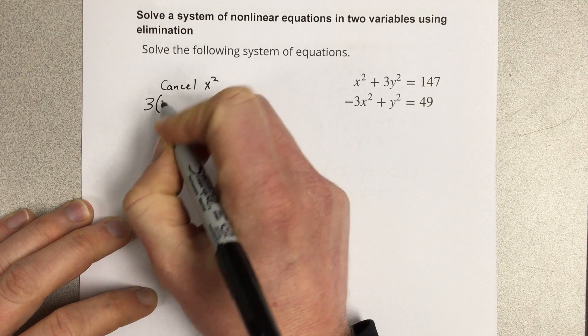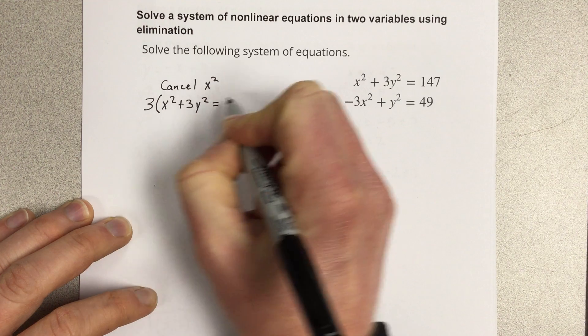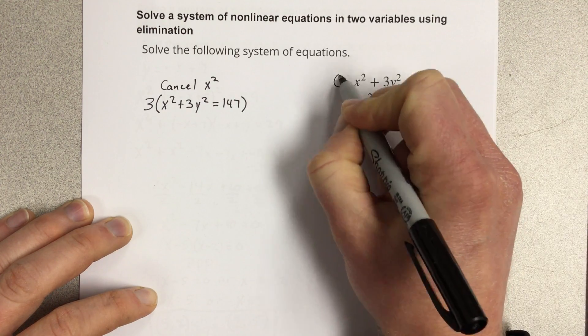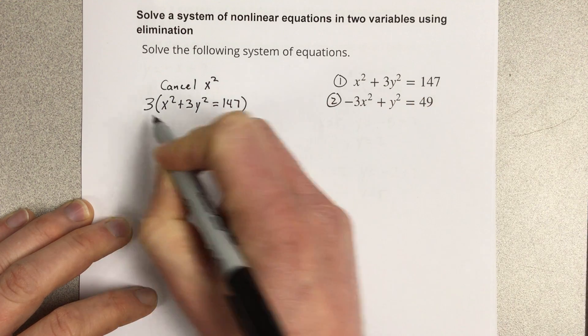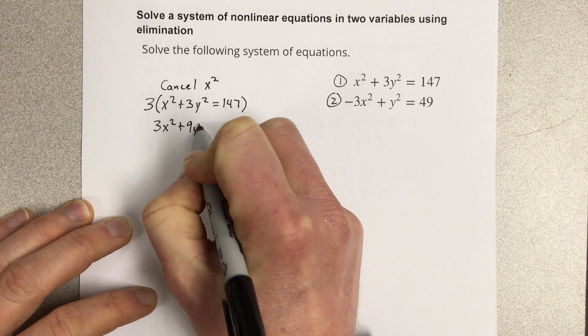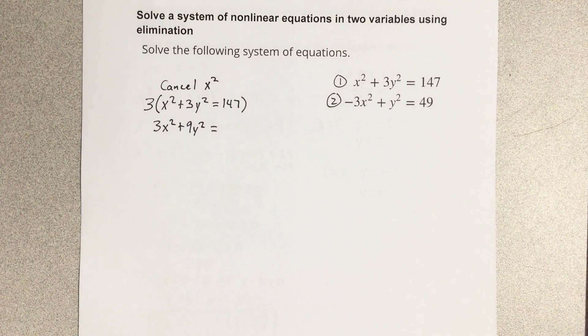I have 3 times x² plus 3y² equals 147. This is equation 1. I'm going to call this equation 2. When I multiply, that's 3x² plus 9y² equals 3 times 147, which is 441.